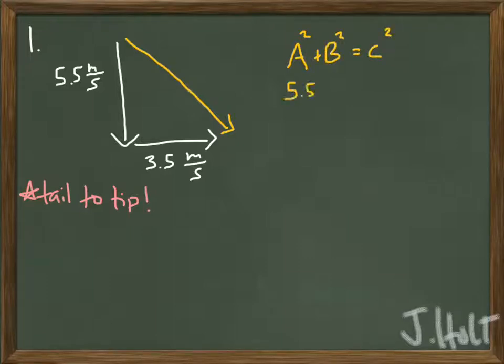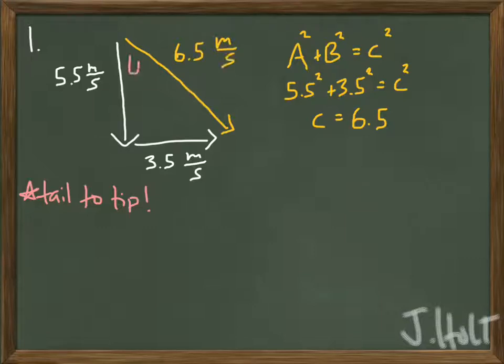So, to find the resultant velocity, we need to use the Pythagorean Theorem. Okay, so now we have the answer to part A, the actual speed would be 6.5 meters per second.